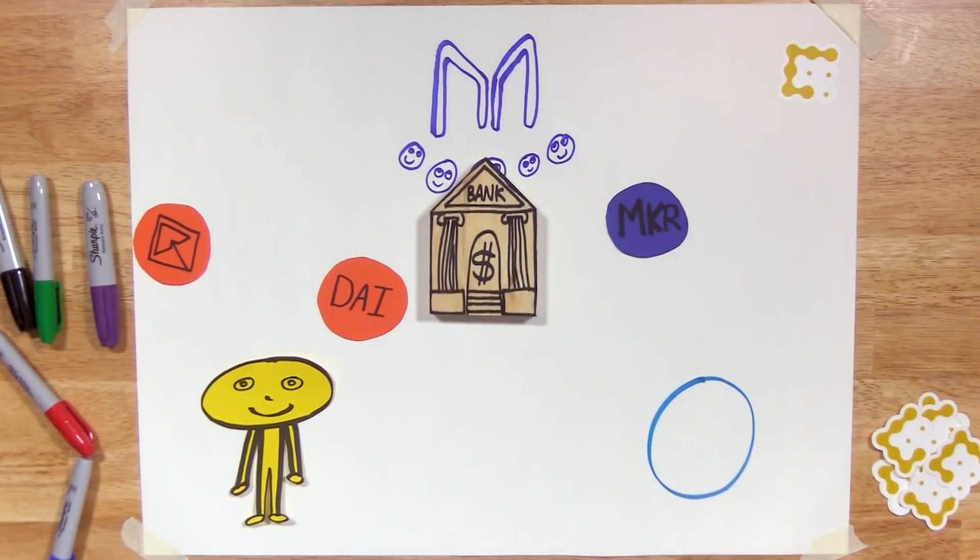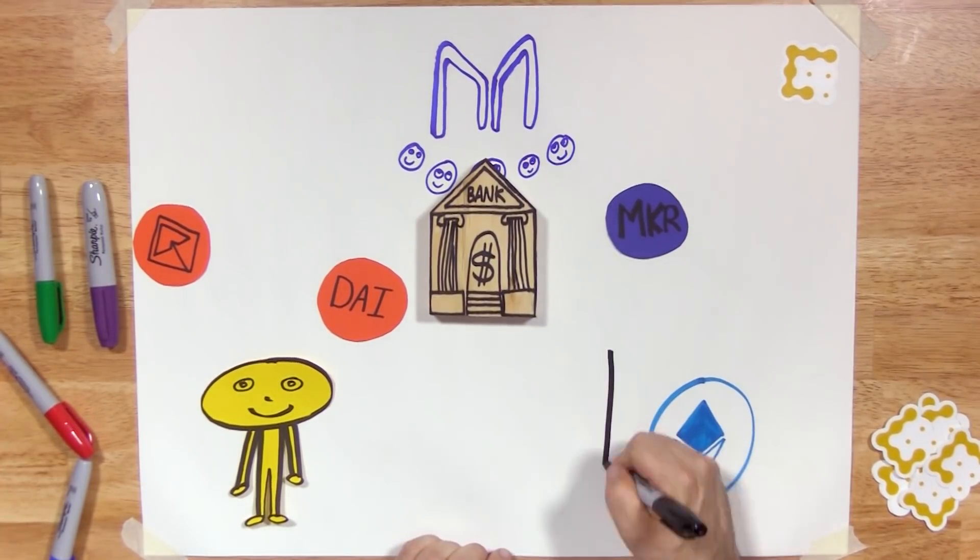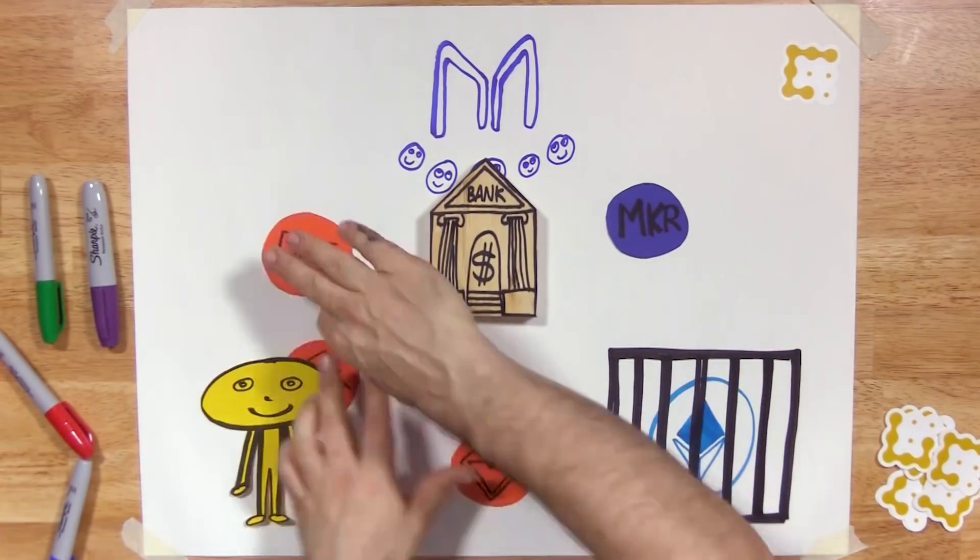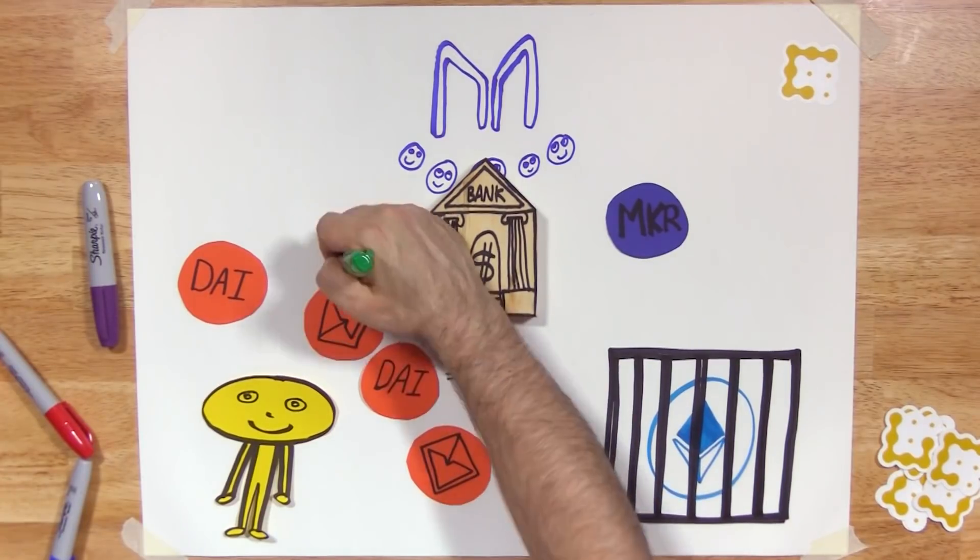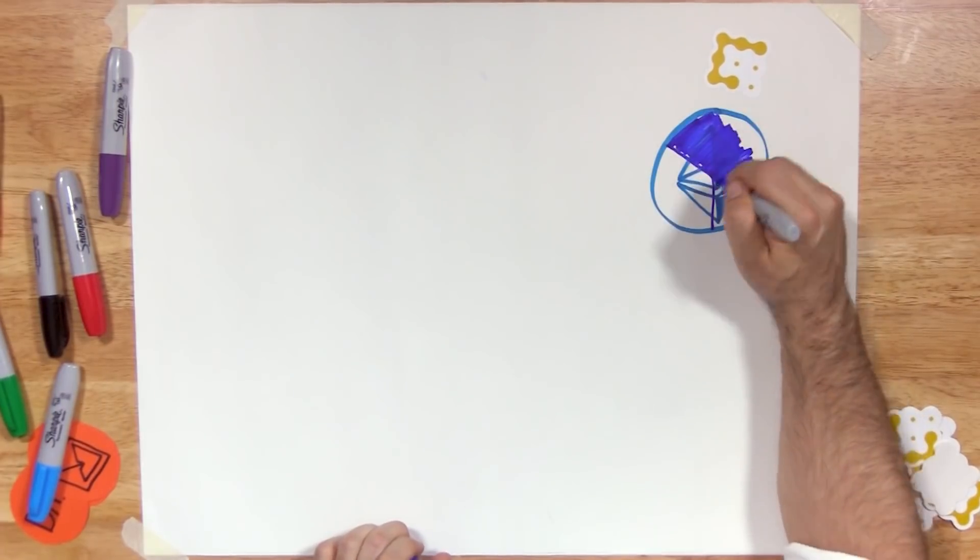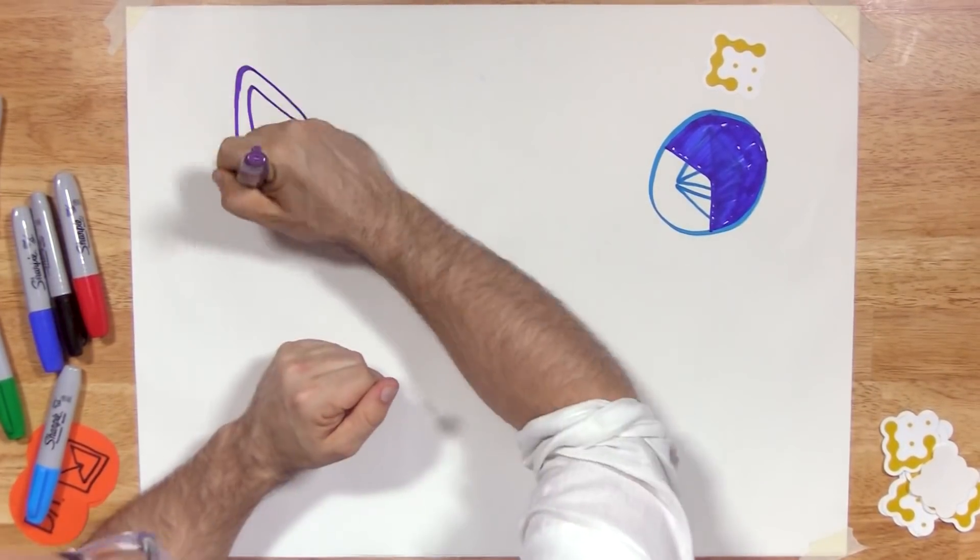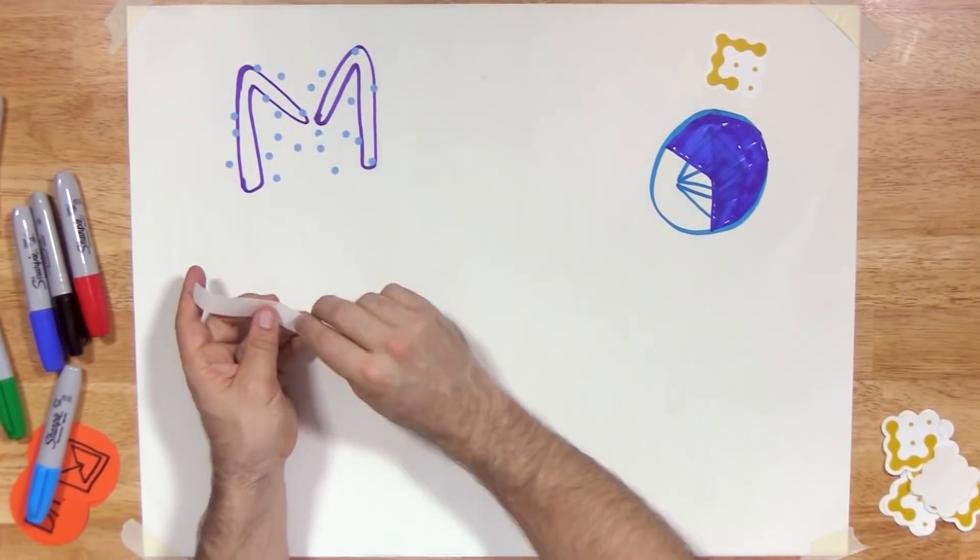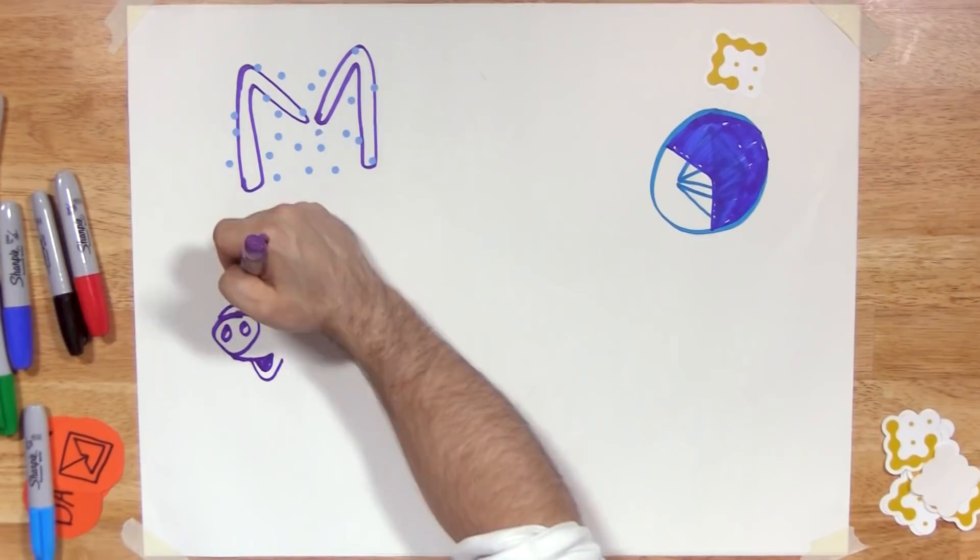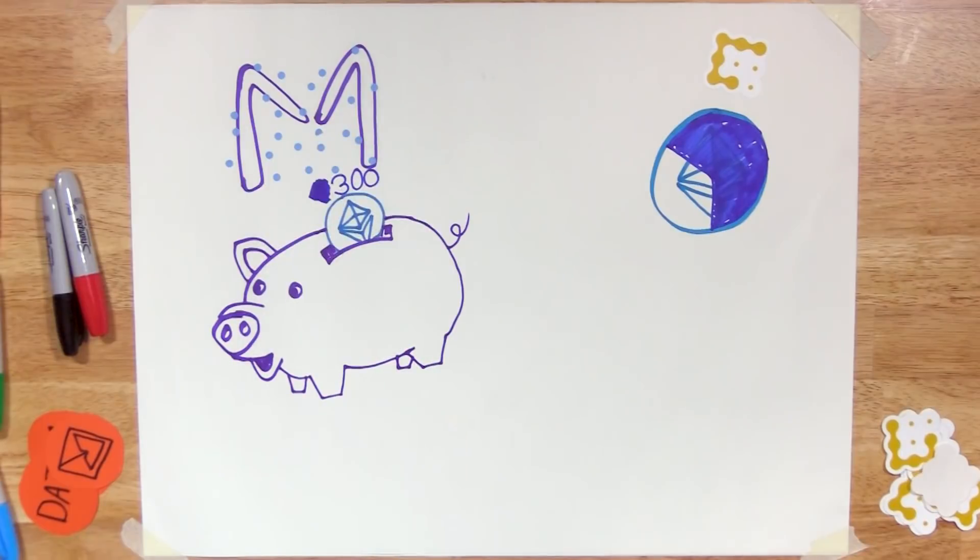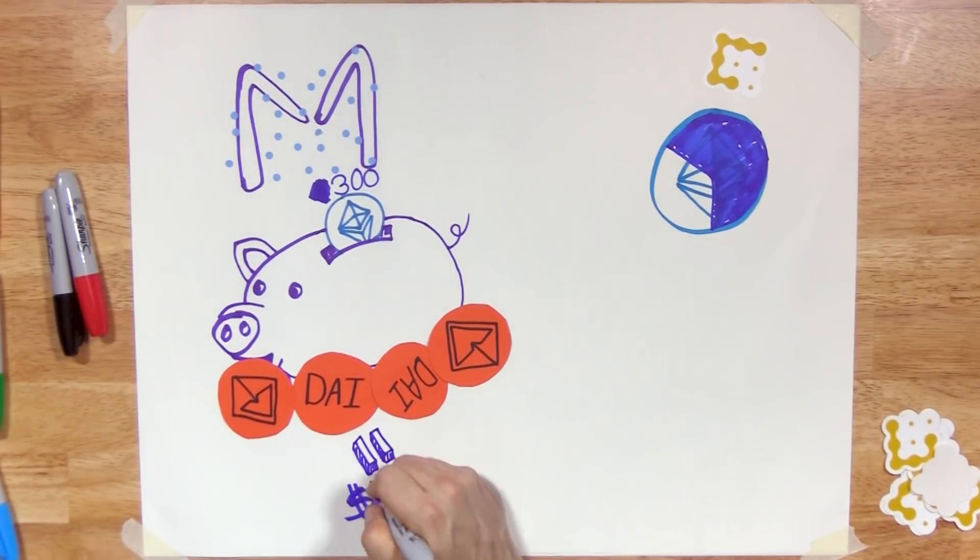While both tokens can be purchased directly on exchanges, DAI is created when users of the system lock up ETH. When users lock up ETH, they can withdraw DAI, which maintains a soft peg to the US dollar. Users can withdraw up to two-thirds of the value of ETH that was locked up. There's currently over $400 million in ETH locked up in MakerDAO. So someone depositing $300 in ETH, at today's prices, could then borrow up to around $50,000 DAI, which would be worth roughly $50,000.